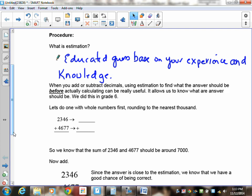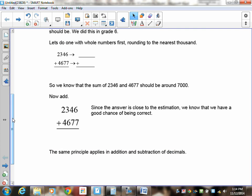When you add or subtract decimals, you use estimation to find what the answer should be before actually calculating, and this can be very useful because it helps you to find out whether you did it right. We did this in grade 6. Let's do one where we round to the nearest thousands.